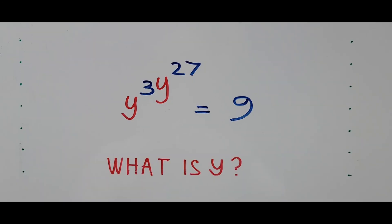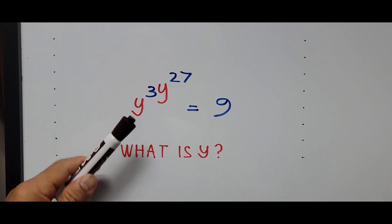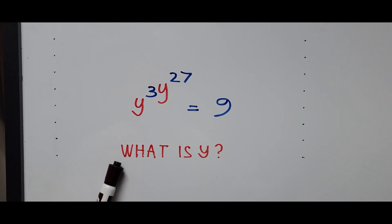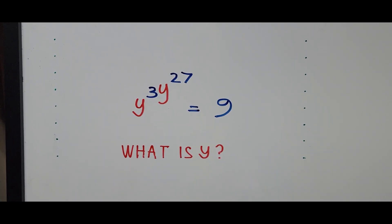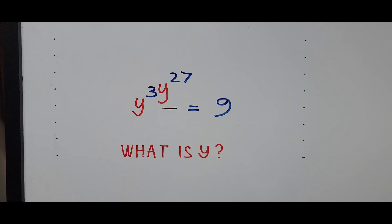Alright, let's start solving. y raised to 3y raised to 27 power equals 9 — we're trying to find the value of y. The first thing we focus on is the exponent y raised to 27, so let's write that down: y raised to 27.